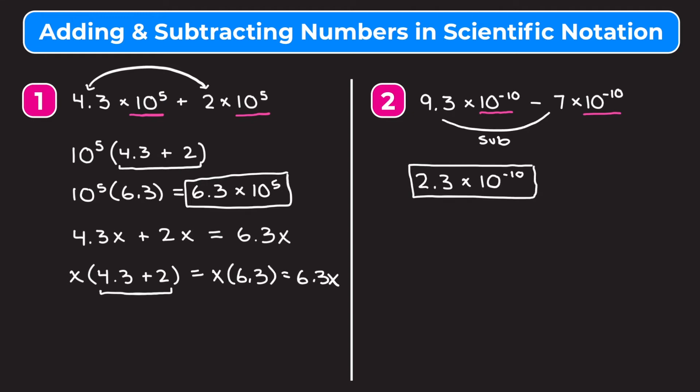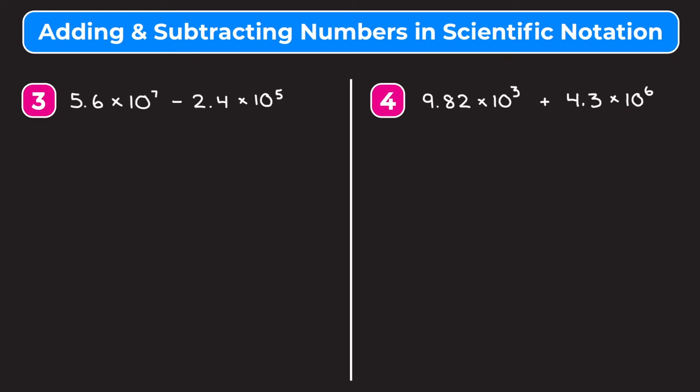Let's go through some examples where our numbers are not being multiplied by the same power of 10. In example 3, we have 5.6 times 10 to the seventh minus 2.4 times 10 to the fifth. We can't use the shortcut because 5.6 is being multiplied by 10 to the seventh, but 2.4 is being multiplied by 10 to the fifth. So what we want to do first is make each number multiplied by the same power of 10. I always like to change the smaller exponent into the larger exponent — so I want to change 10 to the fifth into 10 to the seventh.